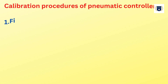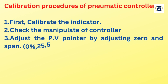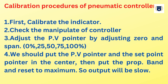Calibration procedures of pneumatic controller. First, calibrate the indicator. Check the manipulate of the controller. Adjust the PV pointer by adjusting zero and span: 0%, 25%, 50%, 75%, 100%. Put the PV pointer and the set point pointer in the center, then put the proportional band and reset to maximum, so output will be slow.